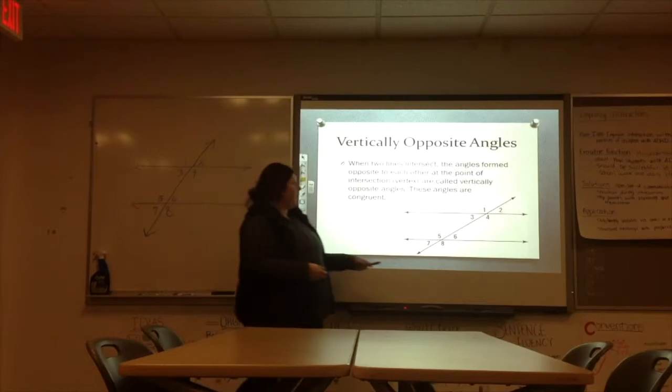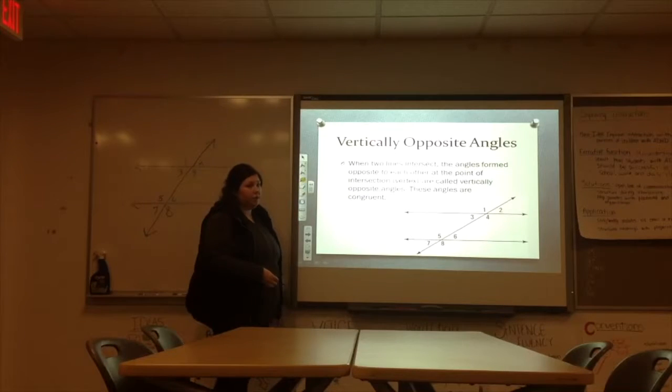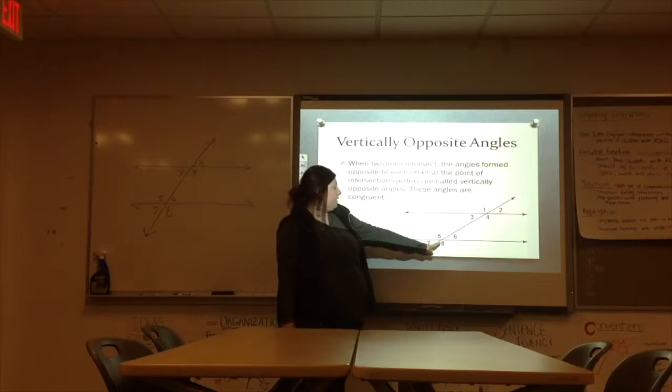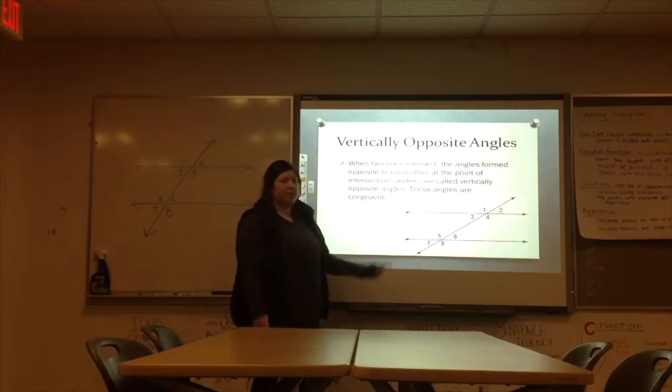Alright, so the first set of angles we're going to talk about are vertically opposite angles. So what does that sound like? They're opposite of each other. So when we have our two lines that intersect, at this point, at this point, it's forming angles. You can see all the numbered angles on the board.